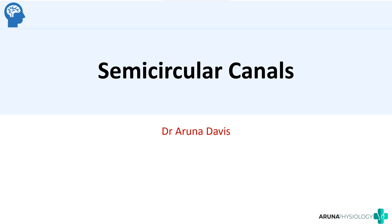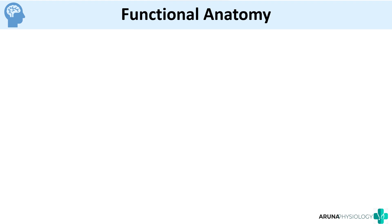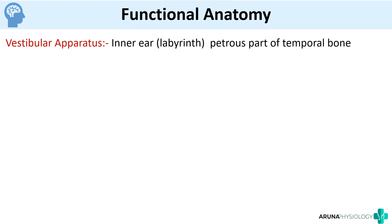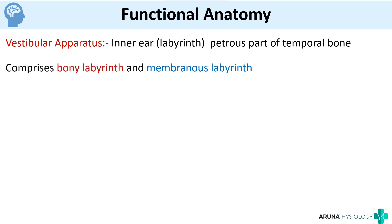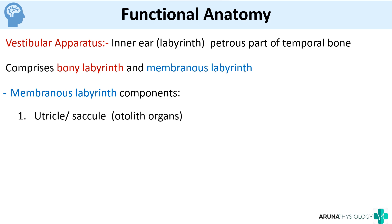In this video we are going to discuss about semicircular canals, which are a part of the vestibular apparatus. This topic can be asked in exams as a short note or as a diagram question. We will see how to approach such a question. First, we look at the functional anatomy: the semicircular canal is part of the vestibular apparatus, present in the inner ear in the petrous part of the temporal bone. It consists of a bony labyrinth and a membranous labyrinth, which includes the utricle and saccule — the otolith organs — as well as the semicircular canals.